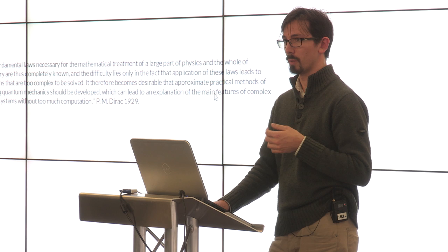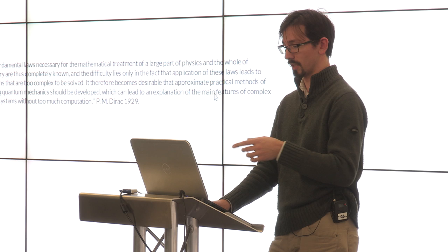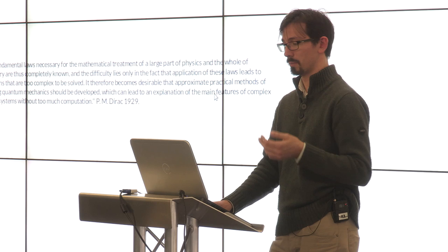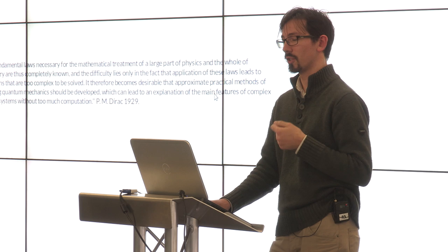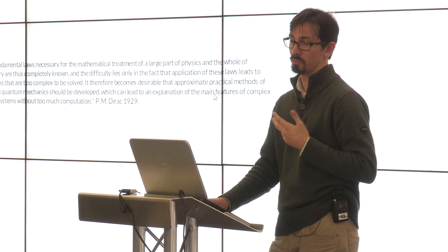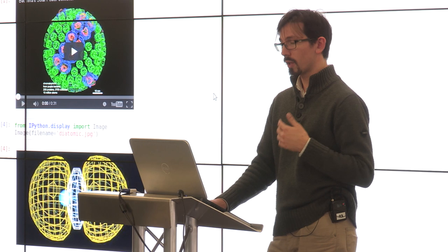And the end of Dirac's sentence is then, after he says we can solve everything already, he goes, it therefore becomes desirable that approximate practical methods of applying quantum mechanics be developed which can lead to an explanation of the main features of complex atomic systems. And since then, the majority of research in this field has been towards constructing these approximate methods so we can compute answers accurately enough to be chemically or physically useful.